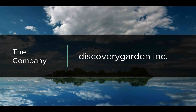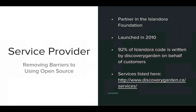Now let's move on to a very quick overview of how Discovery Garden fits into the picture. Discovery Garden is a service provider of Islandora, so we work to remove barriers to using the open source technology. We launched in 2010 and are a partner in the Islandora Foundation. Since we've launched, we've contributed to over 90% of the Islandora code base. A complete list of our services can be found on our website, and I'll include a link in the follow-up package sent out later today.